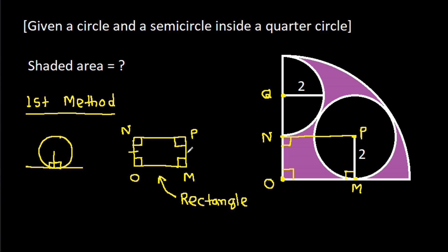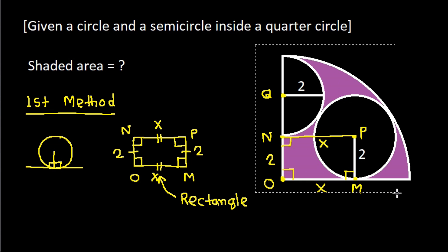So ON will be equal to PM, and PM is 2, so ON will be 2. Also, PN will be equal to OM — suppose OM equals x. So we get ON = 2, and PN = x.